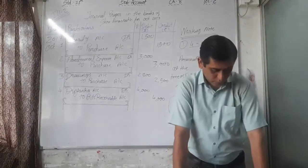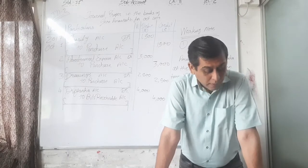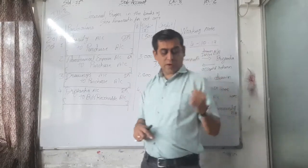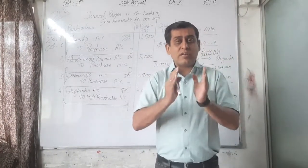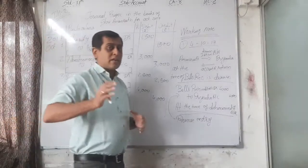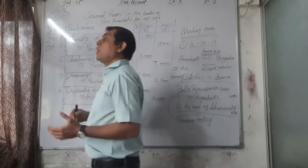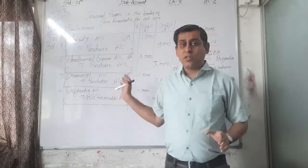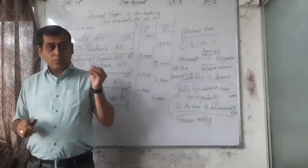Fifth transaction: an amount of rupees 3,500 receivable from Naresh cannot be collected from him. 'Receivable from Naresh' means Naresh is our debtor. 'Cannot be collected' means Naresh refuses to pay any amount due from him — so this is a bad debt. Bad debts are always recorded as a special transaction in the journal proper. Bad debts account debit 3,500.